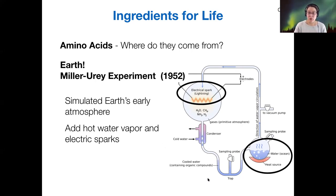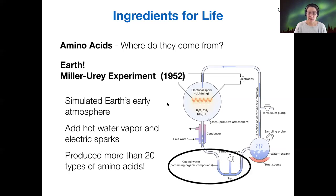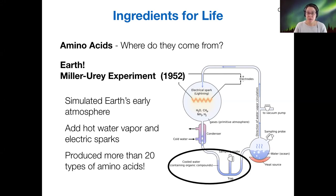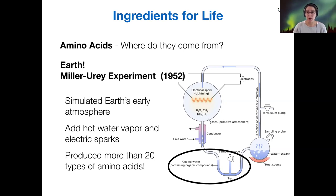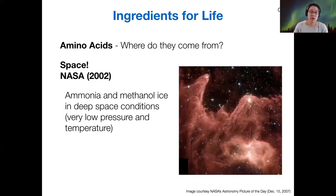The water vapor and the electrical sparks together mimic the sort of weather conditions you would have on early earth. When they analyzed what built up in the trap at the end, they had produced more than 20 types of amino acids. This experiment has been reproduced many times, showing that you can produce amino acids in a non-living environment. So the precursors to life — the amino acids — could have formed on early earth, but maybe they formed somewhere else and came to early earth later.